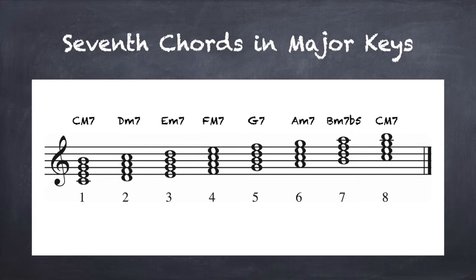In root position, the name of the chord is the lowest note. As with triads, if a root position seventh chord begins on a line note, every note is a line note. And the same is true of spaces.